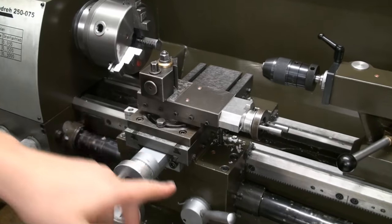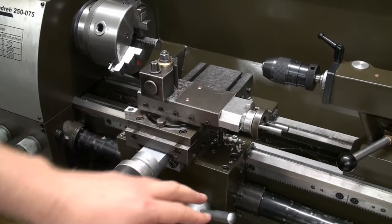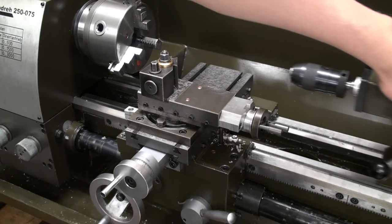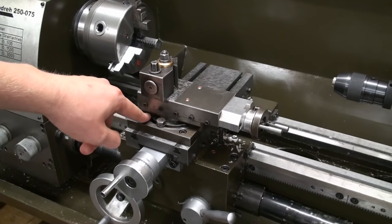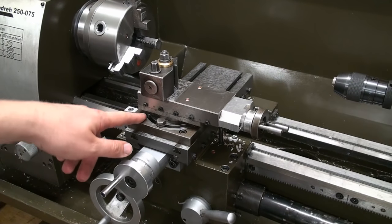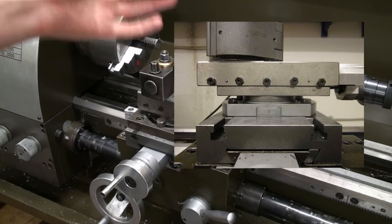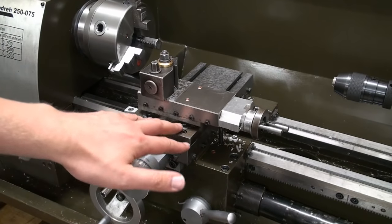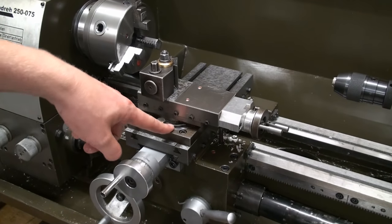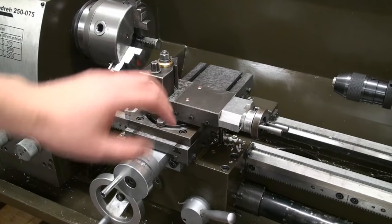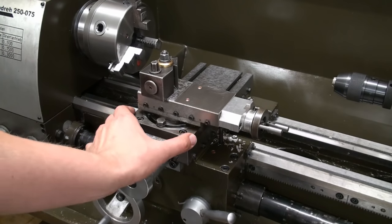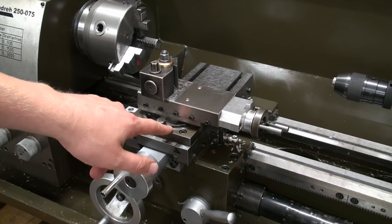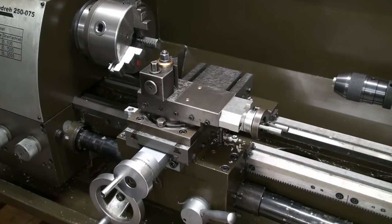First of all I wanted to take a look at the carriage, the cross slide and the top slide. These 9x20 lathes all have a problem with the top slide mount. The original top slide mount, which I have a picture here, those mounts are crap. They lack stiffness in every way. So I decided to build this way more robust support plate, which holds the top slide.